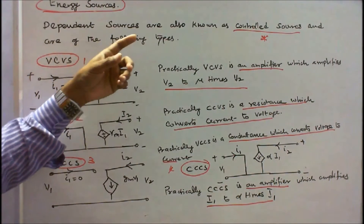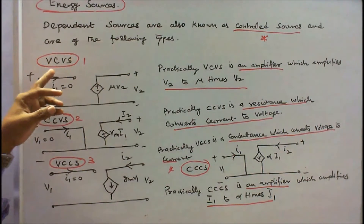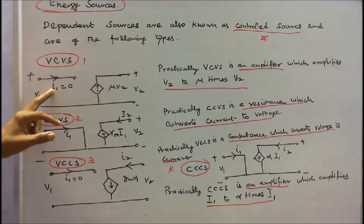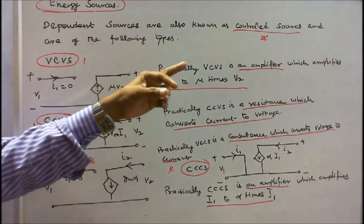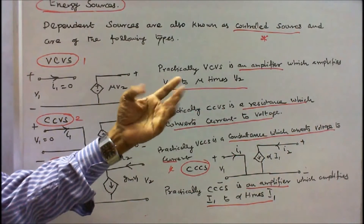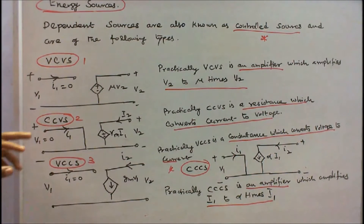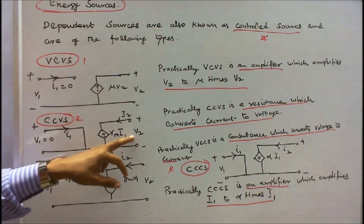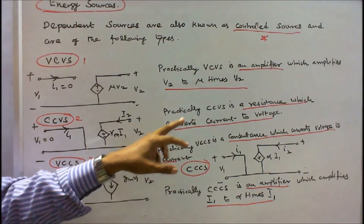Dependent sources are also known as controlled sources. The first type is the voltage controlled voltage source (VCVS). Here V1 is the input, I1 equals zero, and the output is mu times V2. Practically, a VCVS is an amplifier which amplifies V2 to mu times V2. The second type is the current controlled voltage source (CCVS). Here V1 equals zero, I1 is the input, and the output voltage is r times I1. Practically, a CCVS is a resistance which converts current to voltage.